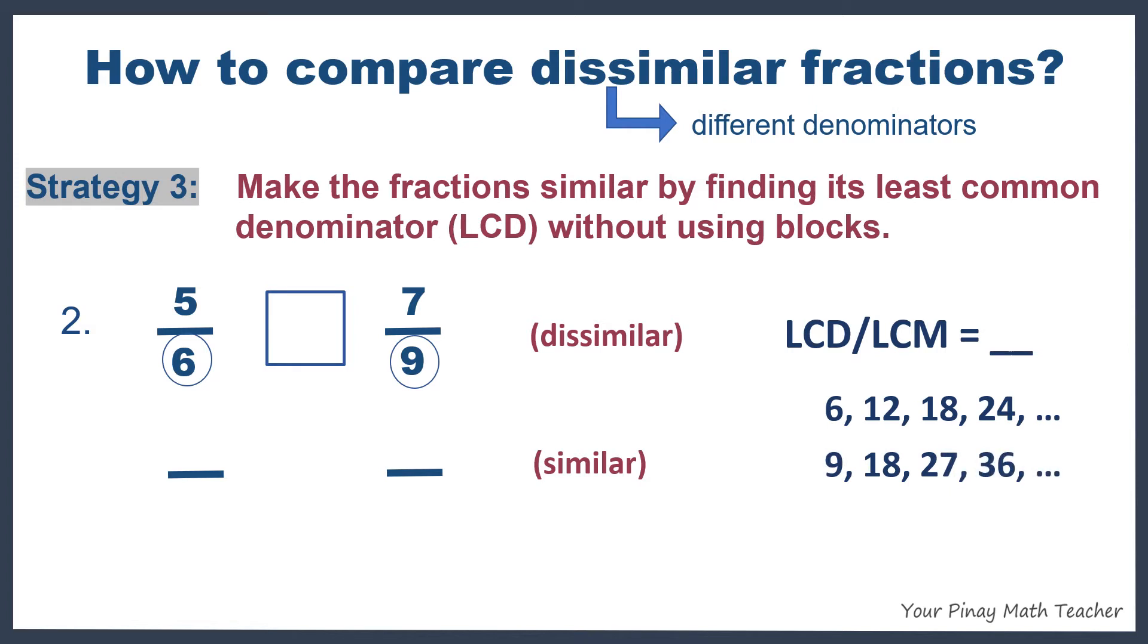Based on the list, our least common multiple or LCD is 18. Place 18 under the fraction bar and then multiply 6 by a certain number to get 18. So what is it? Yes, it's 3. Multiply also 5 by 3. What will you multiply to 9 in 7 9s to get 18? Of course, by 2. Multiply also 7 by 2. So 5 times 3 is 15, 7 times 2 is 14. So we have 15 18ths, 14 18ths. They are now similar. Since 15 18ths is greater than 14 18ths, then 5 sixths is greater than 7 9ths.